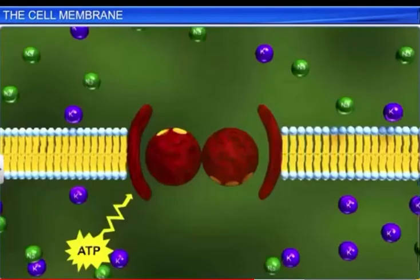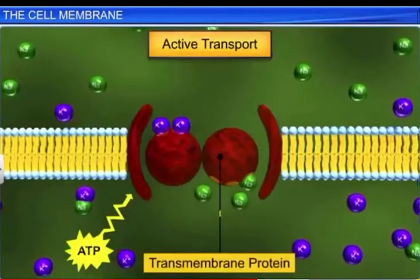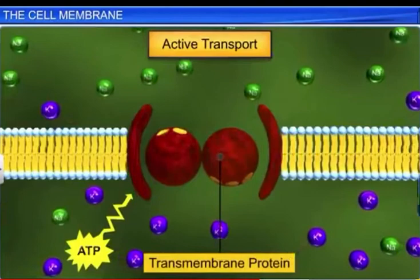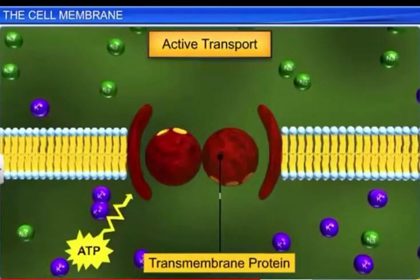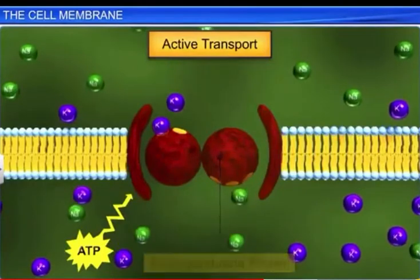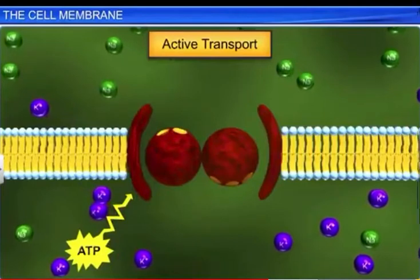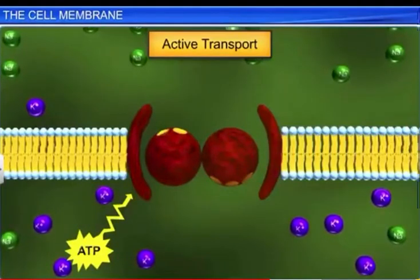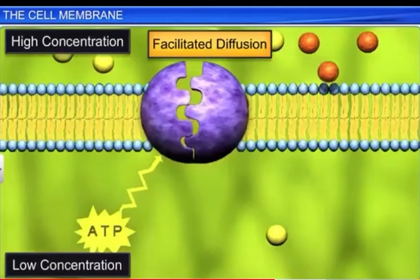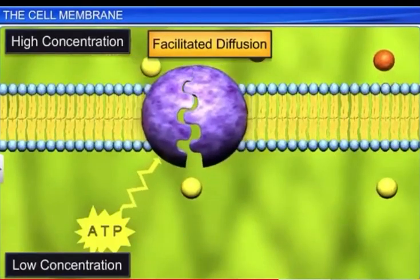In active transport, transmembrane proteins act as pumps and utilize the energy from ATP to move substances against their concentration gradient, that is from lower concentration to higher concentration. An example for this is the sodium-potassium pump. Sometimes, glucose is also transported against the concentration gradient via active transport.